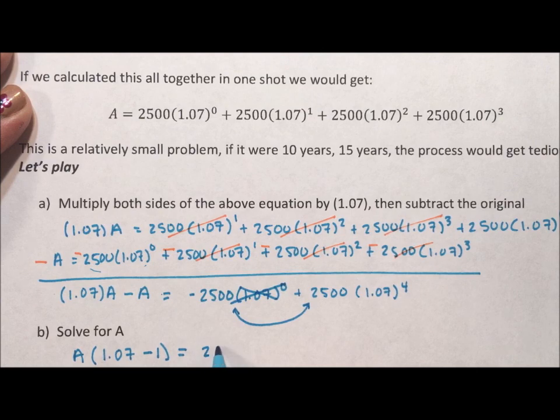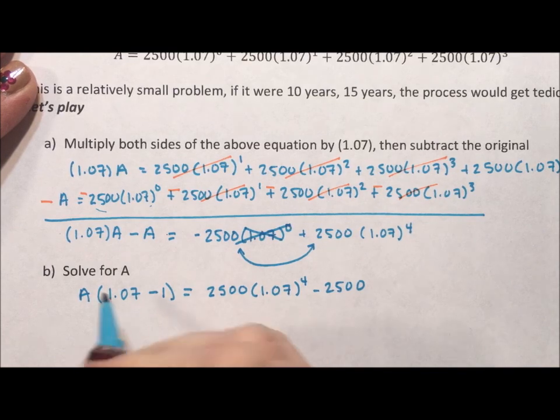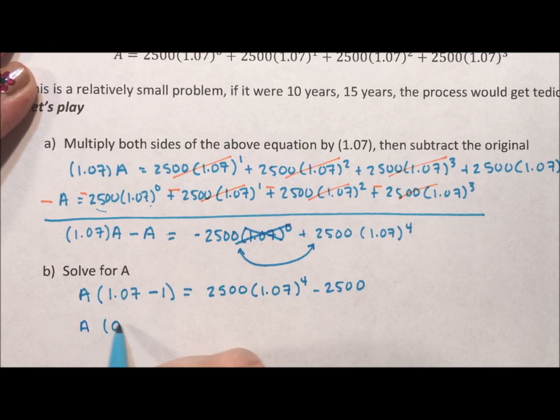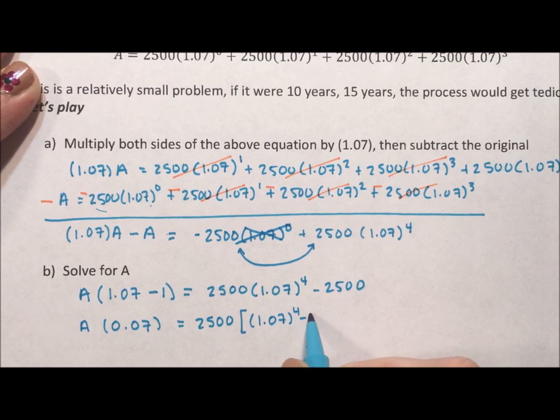So I have 2,500 times 1.07 to the fourth minus 2,500. Just like I factored an A out of the left hand side, I'm going to factor the 2,500 out of the right hand side. And look at this 1.07 minus 1. That's A times 0.07 equals 2,500 times 1.07 to the fourth minus 1.